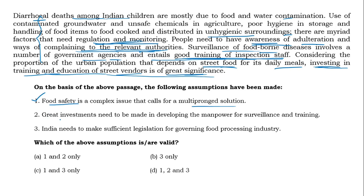Statement 2: 'Great investments need to be made in developing the manpower for surveillance and training.' Yes, this is also supported in the same passage — surveillance of foodborne diseases needs good training of inspection staff, and investing in training and education of street vendors is of great importance. So statement 2 is also correct.